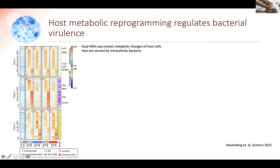Gili first ran a method called dual RNA-seq. We had to figure out what happens to the bacteria in the intracellular environment once the macrophages undergo their metabolic shift. He used a chemical inhibitor to prevent the macrophages from undergoing the metabolic shift and then probed the intracellular bacteria for its gene expression with and without the metabolic shift. Since this chemical inhibitor can also target the bacteria, we used a bacterial mutant that cannot uptake the inhibitor. You can see that the chemical inhibitor inhibits induction of genes important for the metabolic shift.